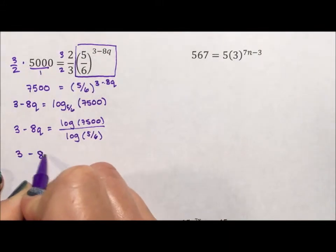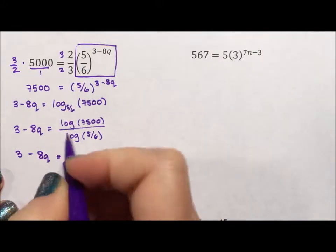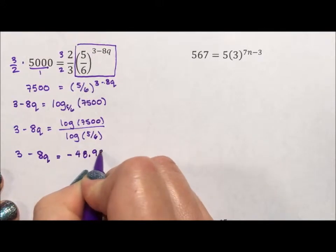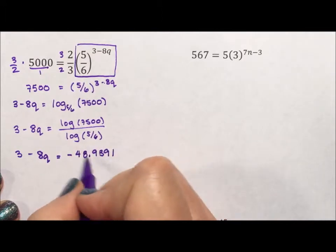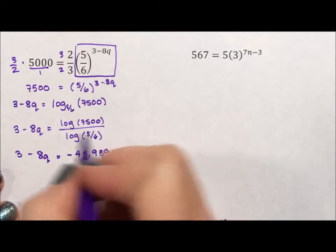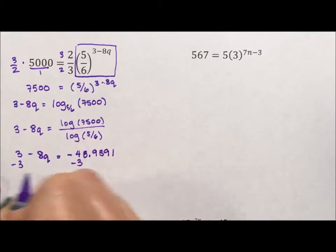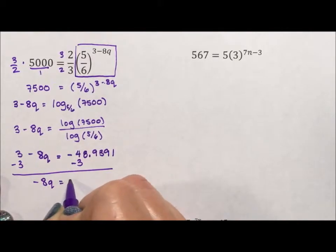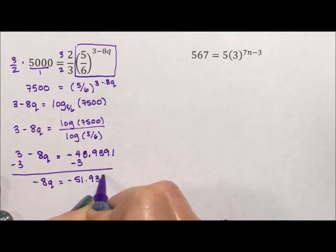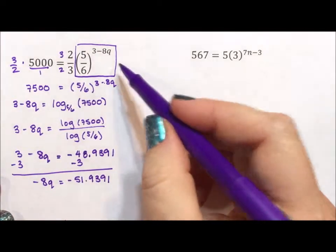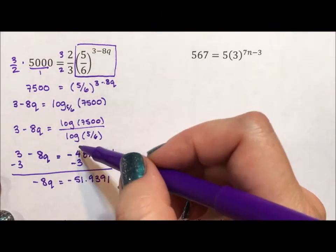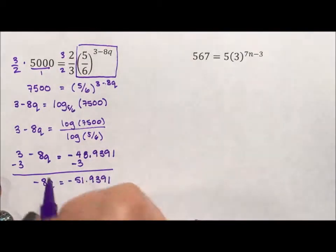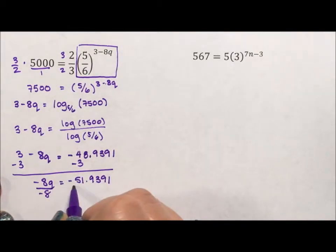So 3 minus 8q is going to equal negative 48.9391. I want to round to 3 decimal places so I make sure I go out at least 4. I'm going to subtract 3 from both sides so that negative 8q is equal to negative 51.9391.